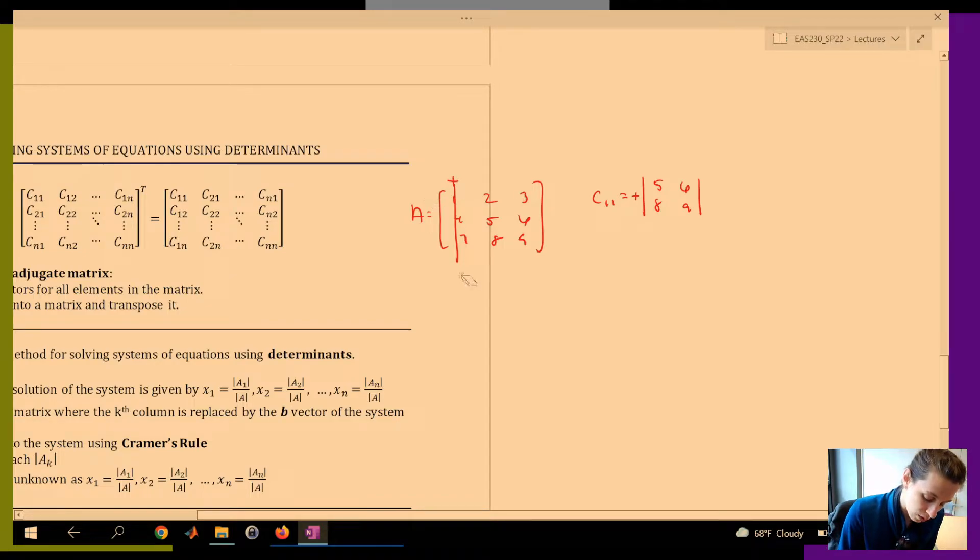If I wanted to do C12, I would take this, remove row 1, remove column 2, and then I'd find the determinant of 4, 7, 6, 9. And the grid here has a minus sign, so I would change the sign.